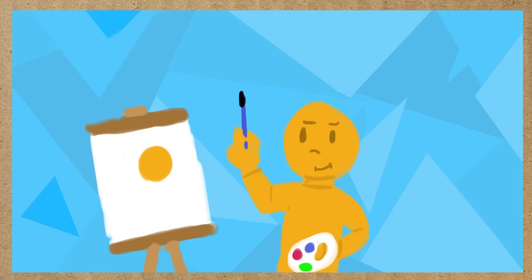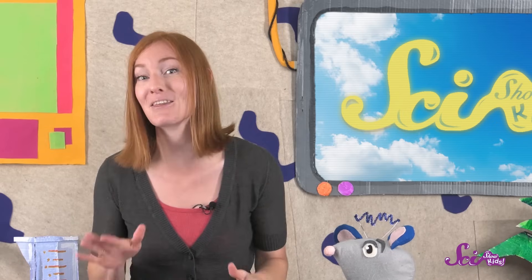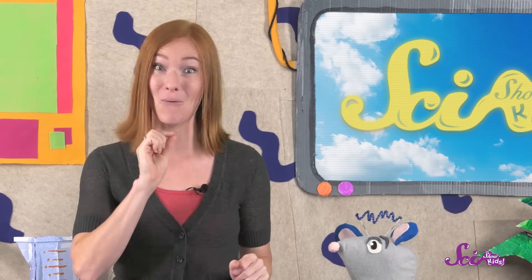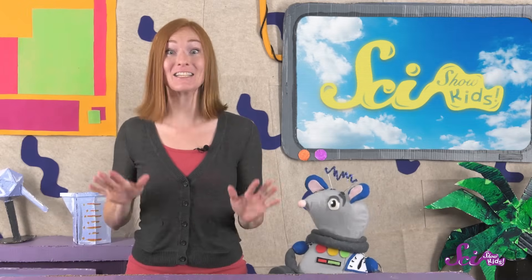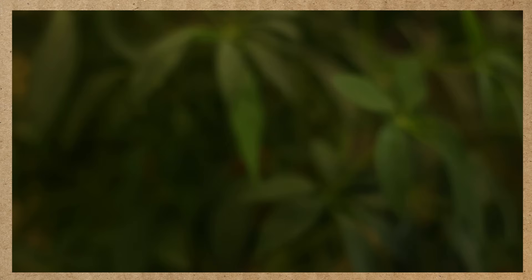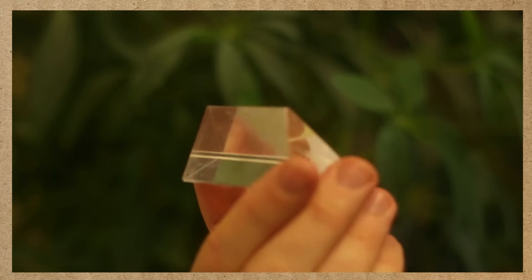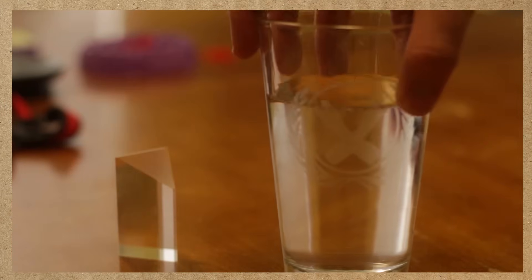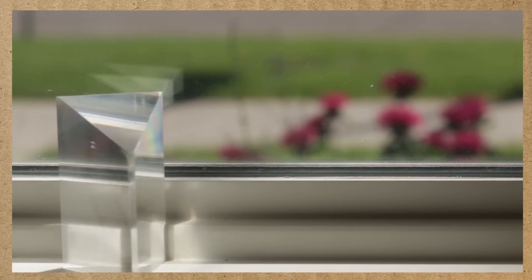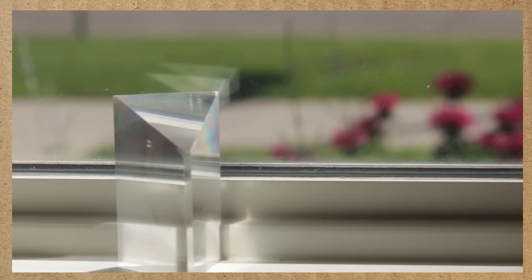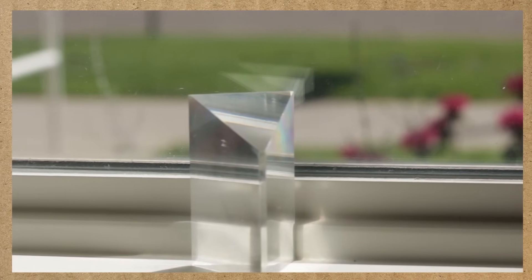It's kind of like when you're painting and you mix together all the colors. With paint, mixing all the colors makes brown. But when you mix together all the colors of light, you get white light. And you can actually see the different colors in light sometimes. One way to do it is by using a tool called a prism, which is usually just a specially shaped piece of glass or plastic. But you can even make a prism out of a glass of water. Prisms bend light in a special way, so that we can see all of the colors that make up light.